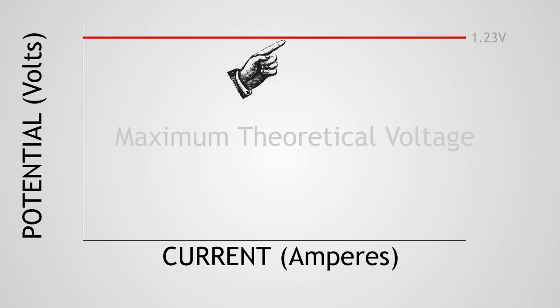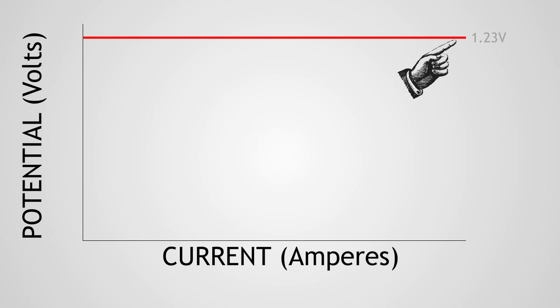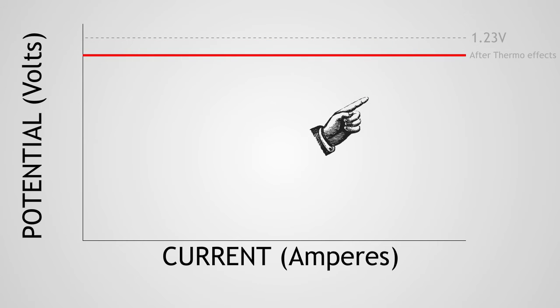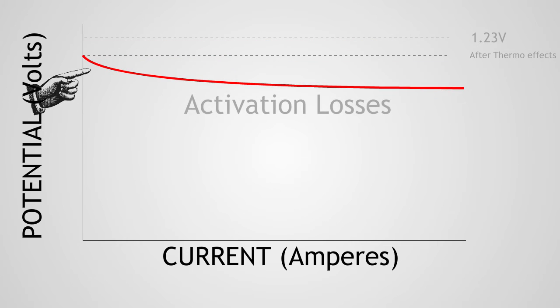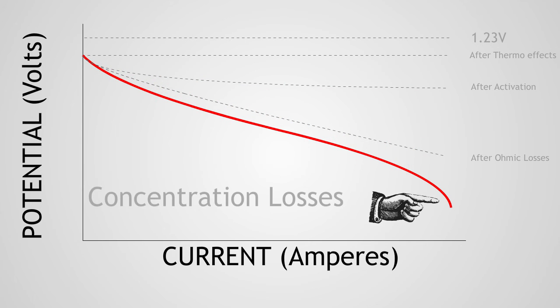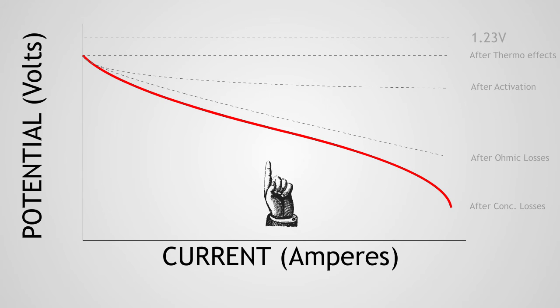Here is the maximum theoretical potential, or voltage. As electrons are allowed to flow, voltage decreases. This occurs for three main reasons: activation losses, ohmic losses, and concentration losses. My research is based on minimizing these losses. That way, I generate the most power.